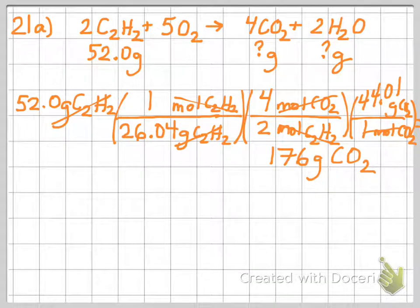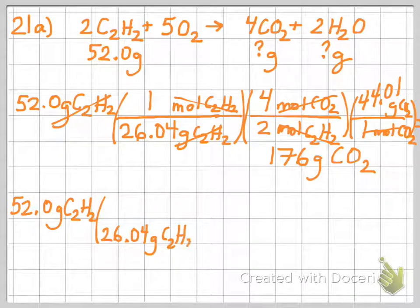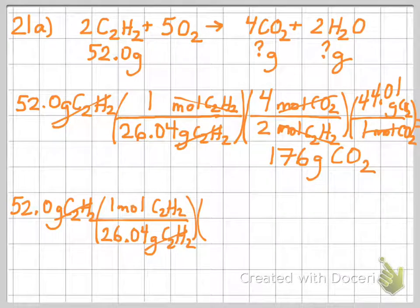Basically, we're going to do the same problem again. We're going to start with our given. We always want to start with our given and not something we've calculated in case we've made a mistake. Again, we're going to use the molar mass of acetylene to convert it to moles.